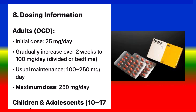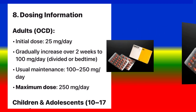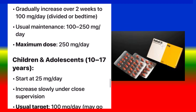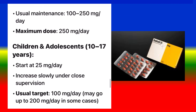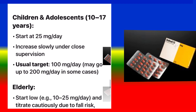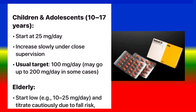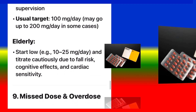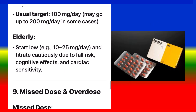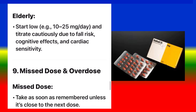Dosing Information — Adults: initial dose 25 mg per day, gradually increase over two weeks to 100 mg per day (divided doses or at bedtime). Usual maintenance: 100–250 mg per day; maximum dose 250 mg per day. Children and adolescents (10–17 years): start at 25 mg per day, increase slowly under close supervision; usual target 100 mg per day, may go up to 200 mg per day in some cases. In the elderly, start low (10–25 mg/day) and titrate cautiously due to fall risk, cognitive effects, and cardiac sensitivity.